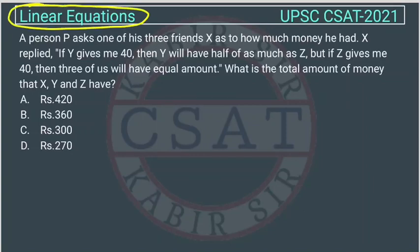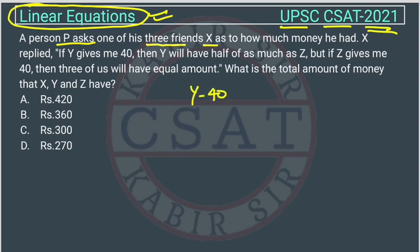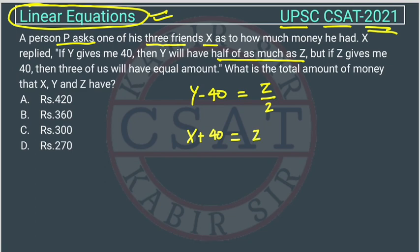This is a question from the chapter on linear equations, asked in the UPSC set paper of 2021. A person P asked one of his three friends, X, how much money he had. X replied: if Y gives me 40, then Y will have Y minus 40. Y will then have half as much as Z. But if Z gives X 40, then all three of them will have equal amounts.